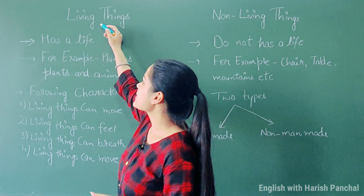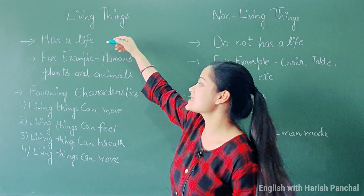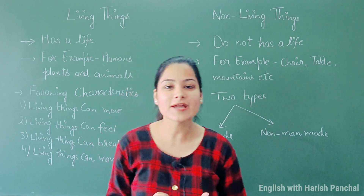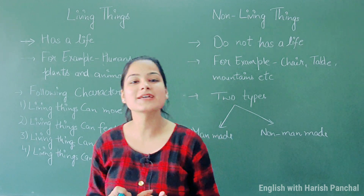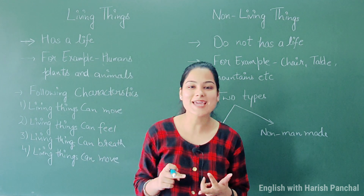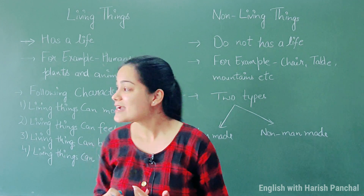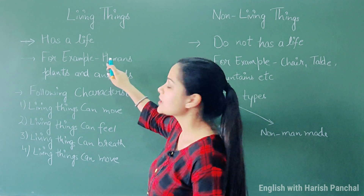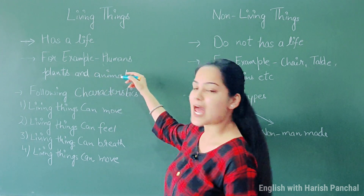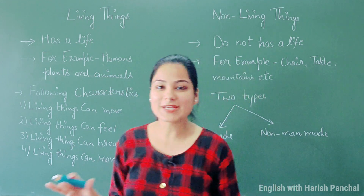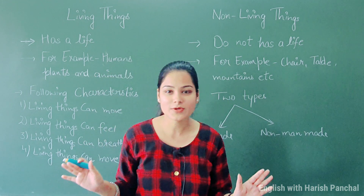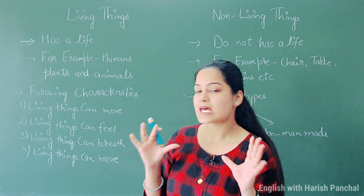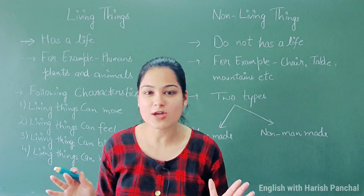Living things have a life. Living things can move, can feel, can breathe, and can reproduce. Some examples of living things are humans, plants, and animals. They all can breathe, move, and grow. These are some of the major characteristics of living things.